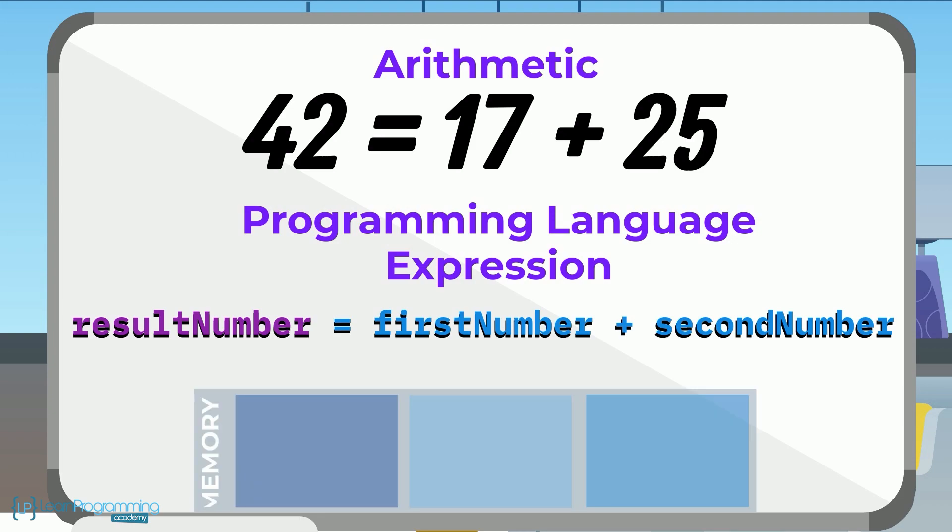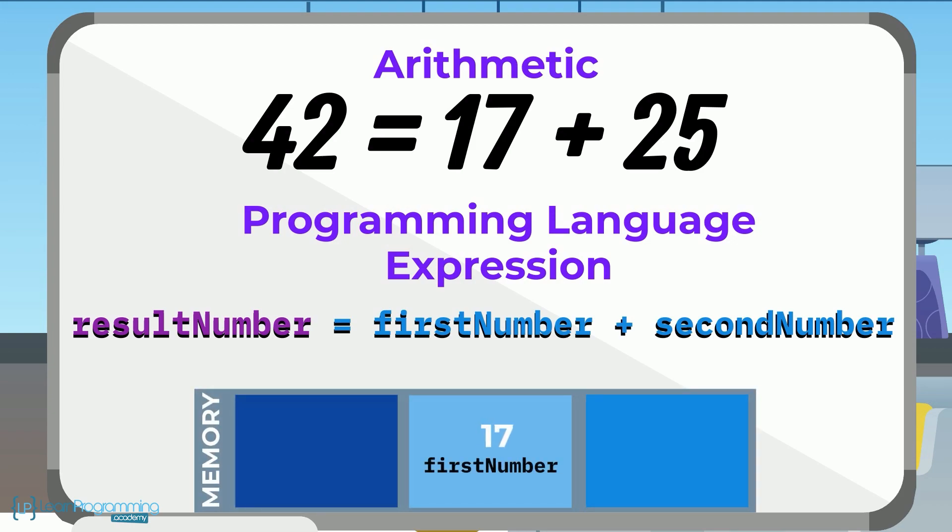17 would be stored in the memory location named first number, 25 would be stored in the memory location named second number, and 42 would be stored in the memory location result number, after the computer performed the adding of the two numbers together to yield the result.